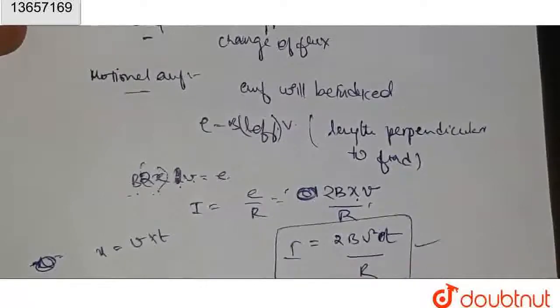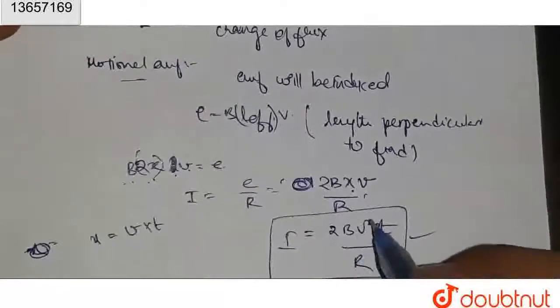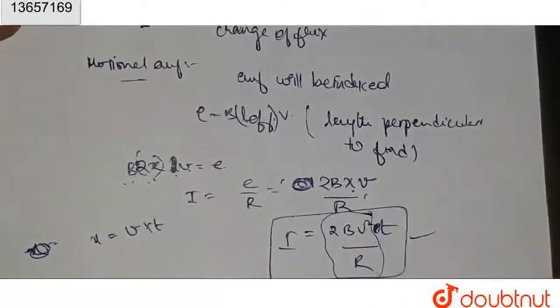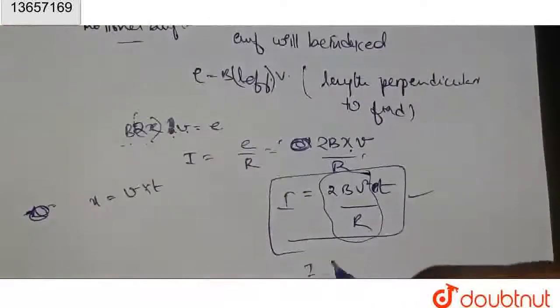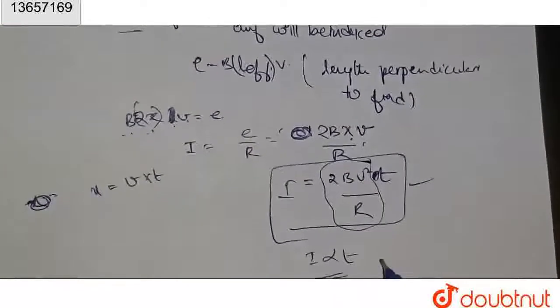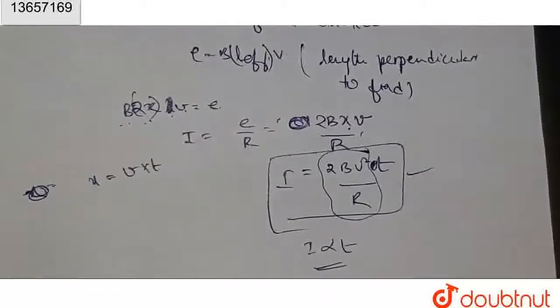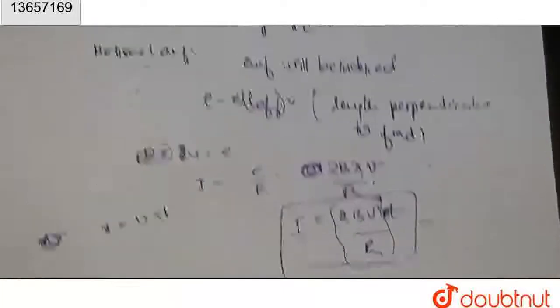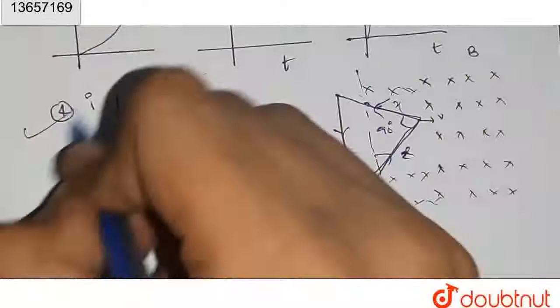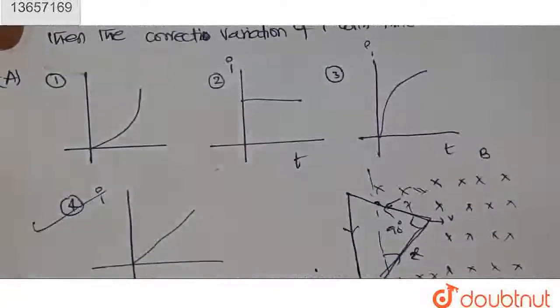2B V squared T by R. This is our current. All these are constant, so i is proportional to T. I proportional to T means it is a straight line passing through origin. So this will be our option, the fourth option. Thank you.